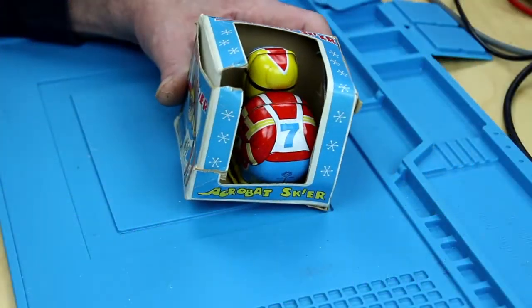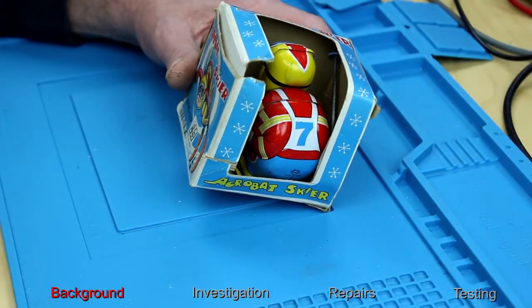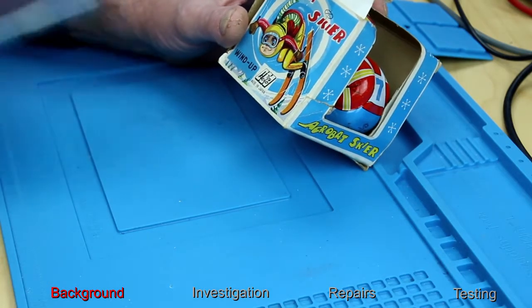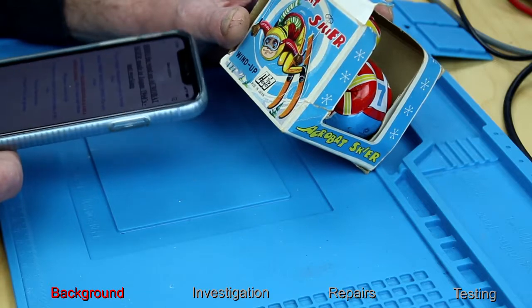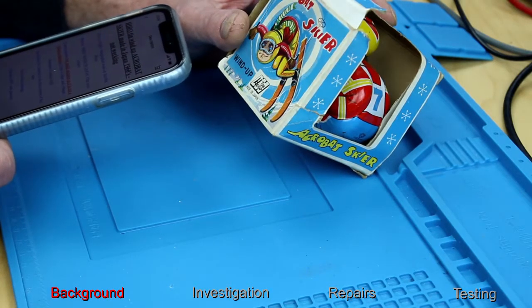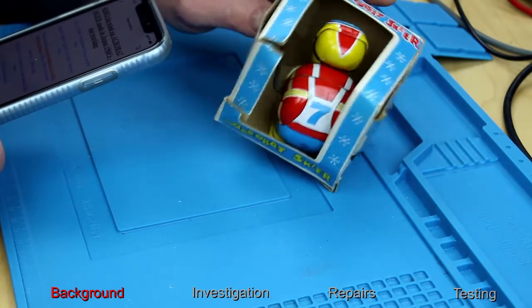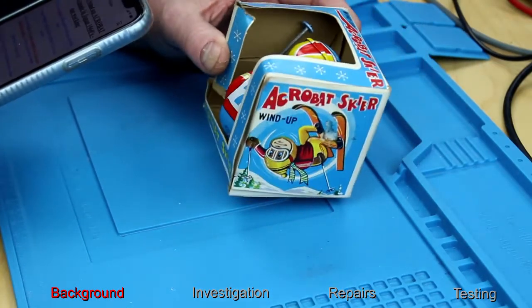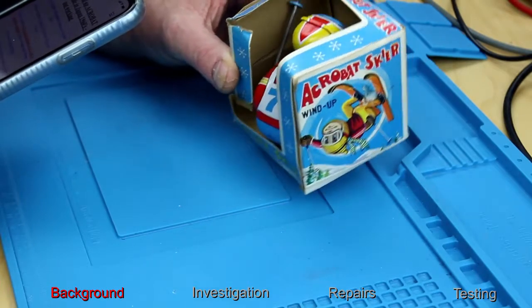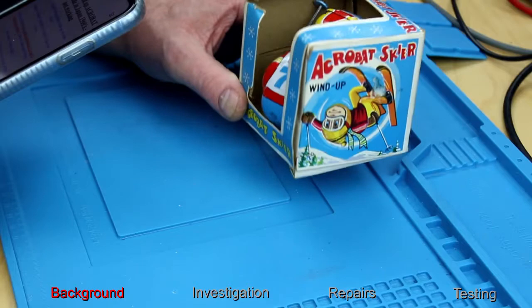On the bench today I have a mechanical item, so no batteries required. It's an acrobat skier from the 1960s. This came from eBay. The description was Hiro Tin wind-up acrobat skier made in Japan in the 1960s. Not working. This is a highly lithographed wind-up acrobat skier.